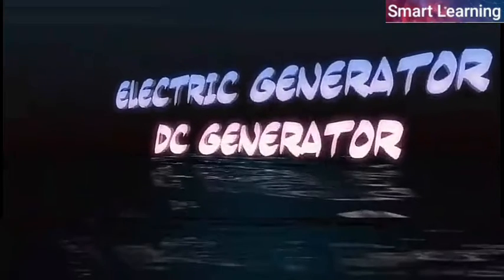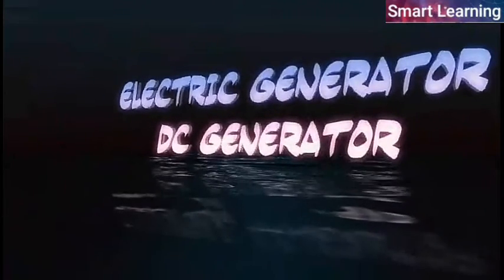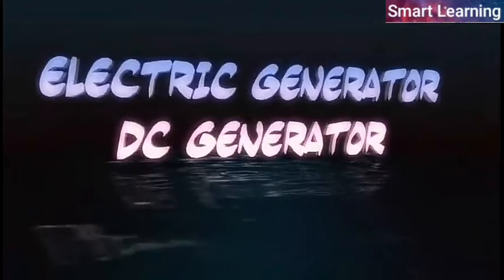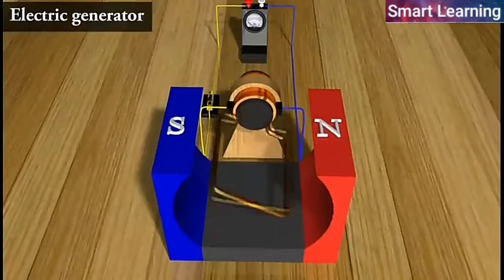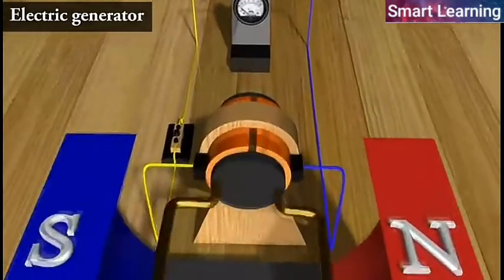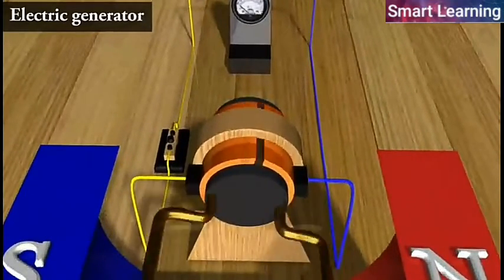Electric generator, DC generator. To get a direct current or DC which does not change its direction with time, a split ring type commutator must be used.